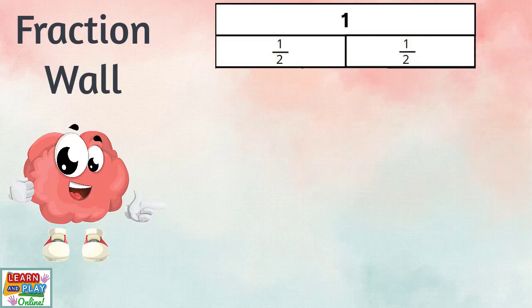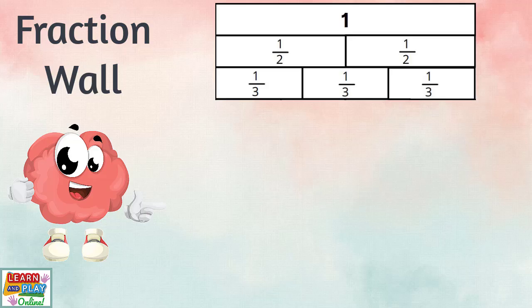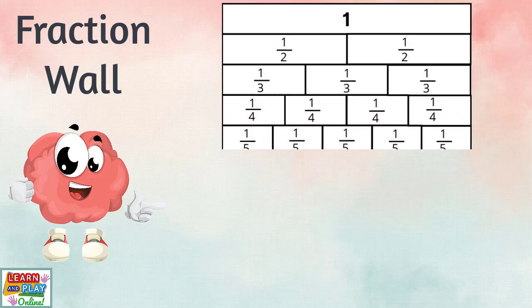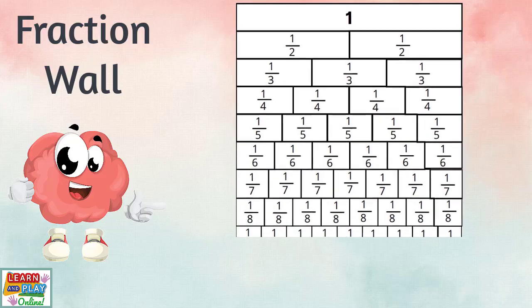Now let's see what our whole would look like if we divide it into thirds to have three equal parts. As you can see, we can keep dividing the whole at the very top into many different fractions with different sized equal parts.